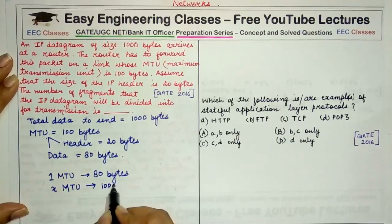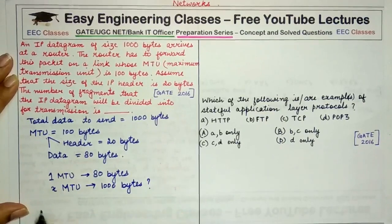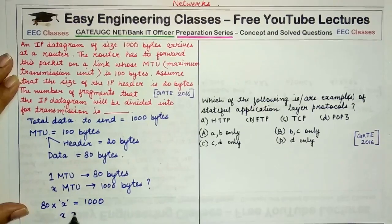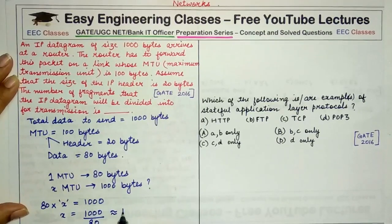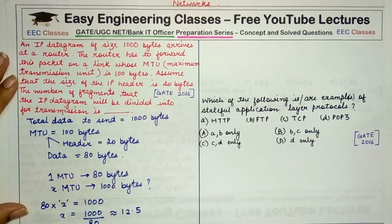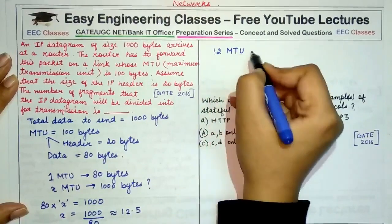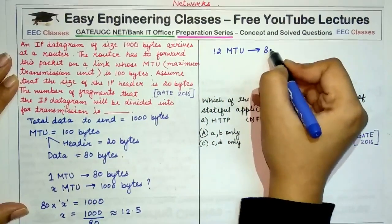We need to find how many MTUs are required to carry 1000 bytes of data. We can write: 80 × x = 1000, where x is the total number of MTUs. So x = 1000 ÷ 80 = 12.5. Since 1000 is not an exact multiple of 80, we work from this.